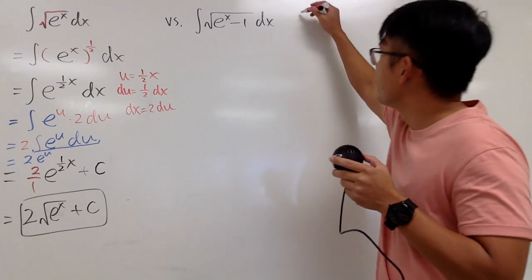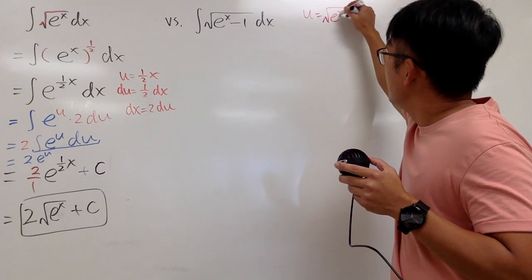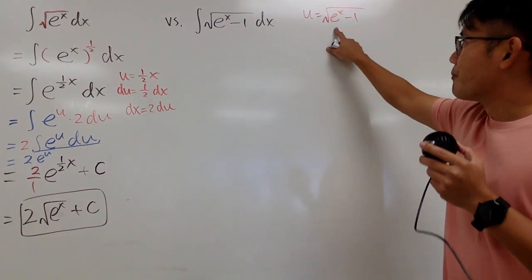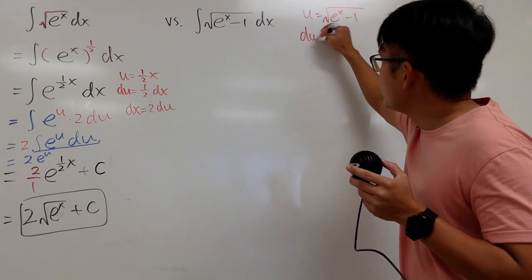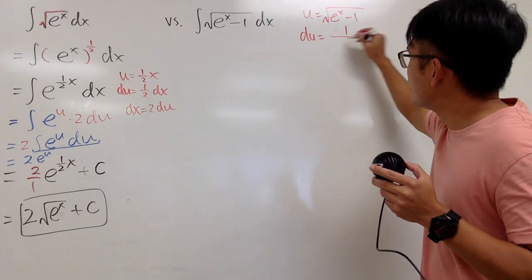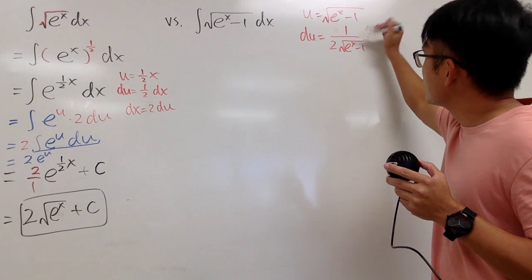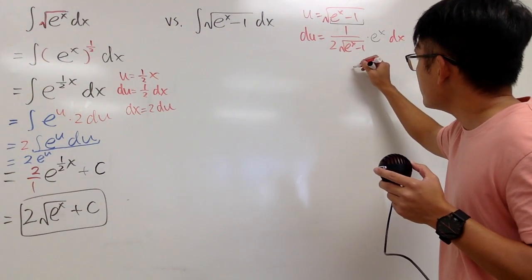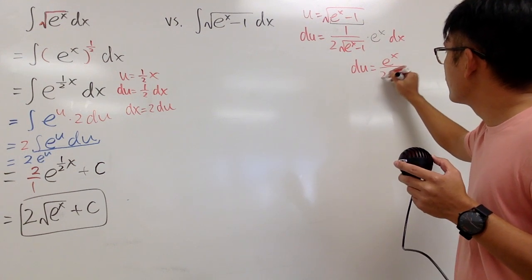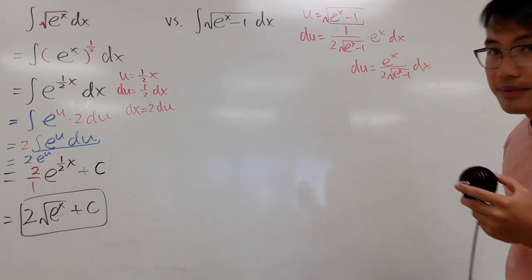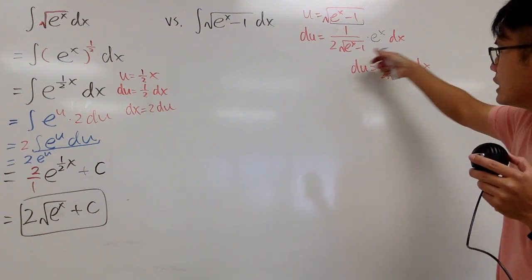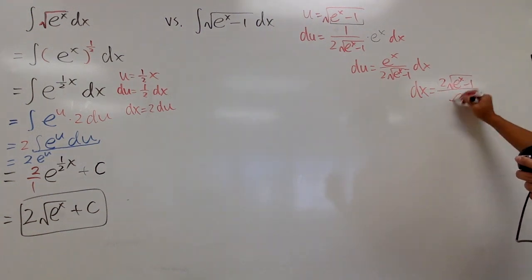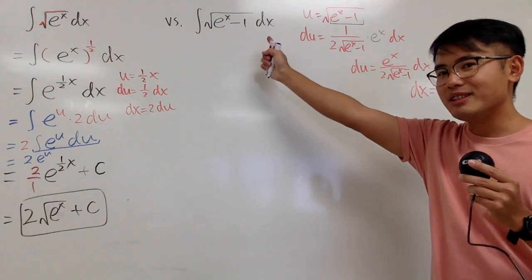I will let u equal to the whole thing — the square root of e to the x minus 1. Let's differentiate: du equals 1 over (2 times the square root of the inside), multiplied by the derivative inside by the chain rule, times dx. In other words, du equals e to the x over (2 times the square root of e to the x minus 1) dx. To isolate dx, multiply both sides by the reciprocal: dx equals 2 times the square root of e to the x minus 1, over e to the x, du.